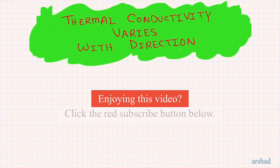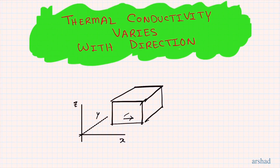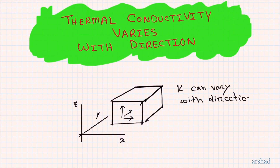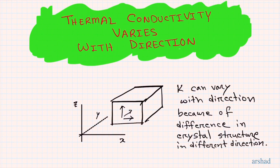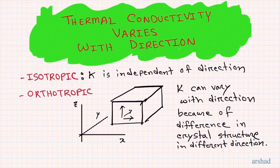Thermal conductivity also varies with direction. For a block of material in an X-Y-Z coordinate system, the thermal conductivity in the X direction may not be the same as in Y or Z. This is due to differences in crystal structure in different directions. We can classify materials based on how their properties vary with direction: isotropic materials have thermal conductivity that is independent of direction.